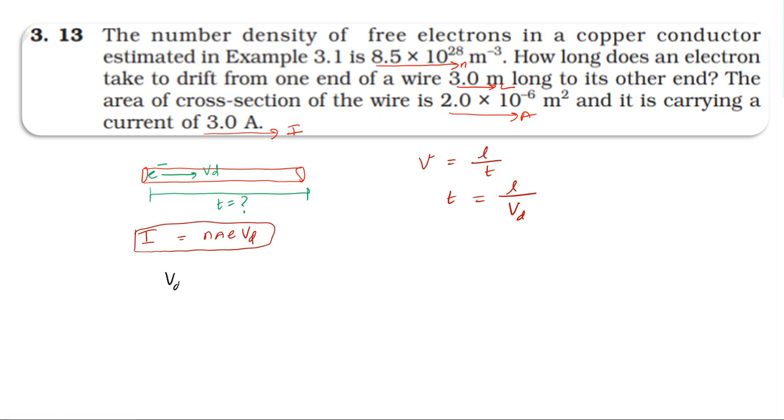The drift velocity v_d equals I divided by n A e. Current is equal to 3 amperes divided by n equals 8.5 into 10 power 28, area of cross-section equals 2 into 10 power minus 6, and the charge of electron is 1.6 into 10 power minus 19.